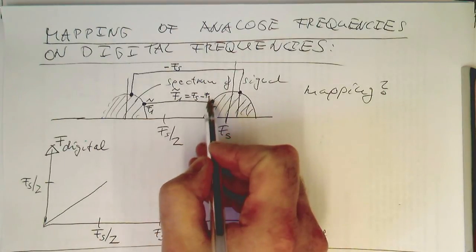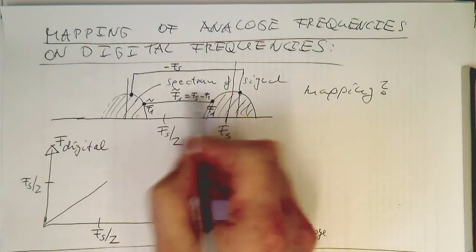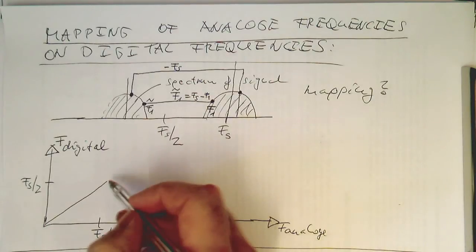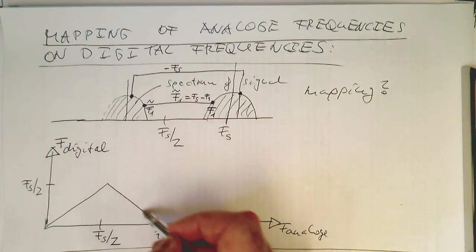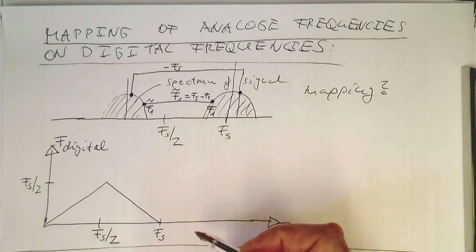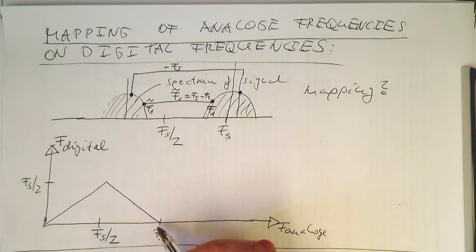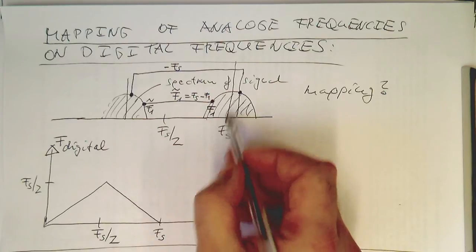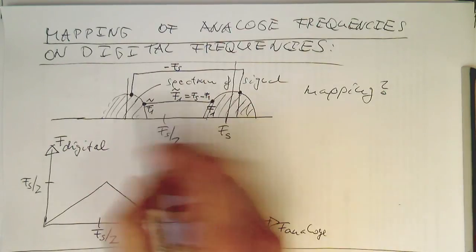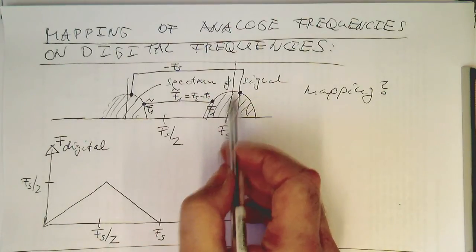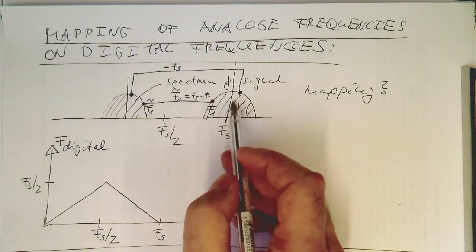So if this frequency here becomes Fs, we are getting zero out there. So this goes down again. And so now if our frequency is at Fs, we are basically at the DC again. So we know this already from our previous drawings.